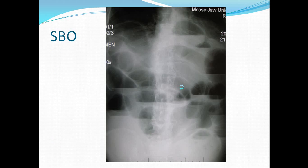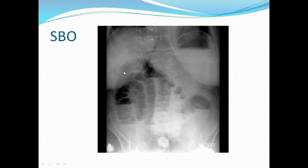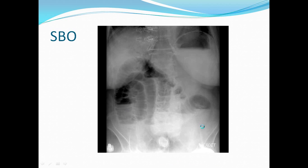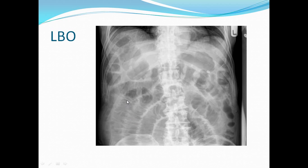This image illustrates a small bowel obstruction — you can see dilated bowel loops with multiple air-fluid levels. This is also a small bowel obstruction with diffuse dilated bowel loops. And this is a large bowel obstruction, with dilated loops visible here and here. Thank you very much.